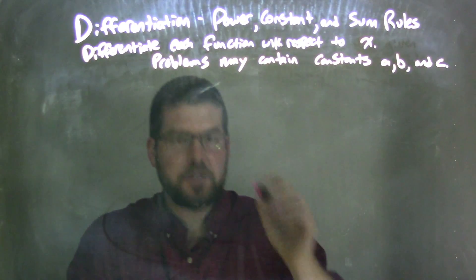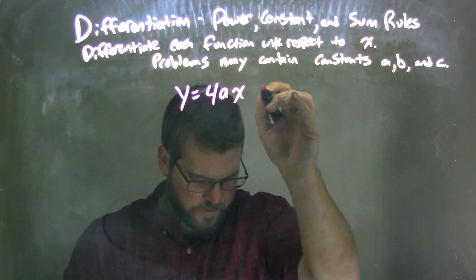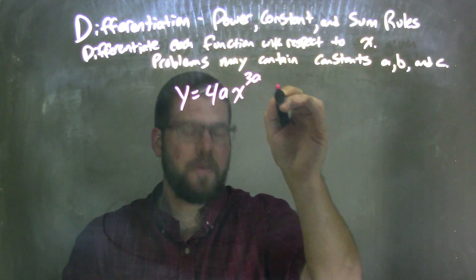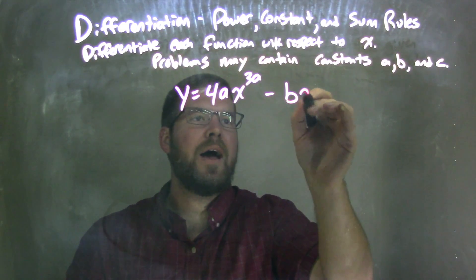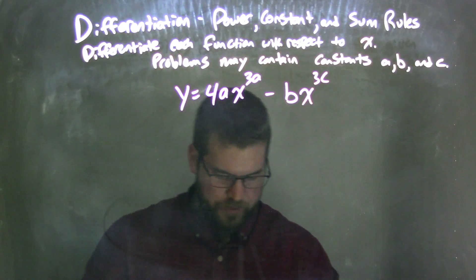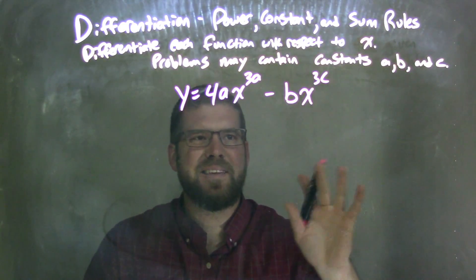So if I was given this function, y equals 4ax to the 3a power minus bx to the 3c power. So again, let's remember our constants are a, b, and c. The only variable here is actually the x and then the y.